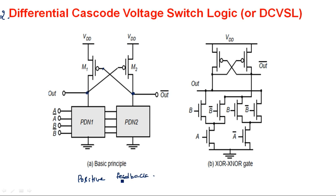The advantage of this cross-coupled connection is that it gives positive feedback. Unlike common source, common drain, or common collector amplifier configurations which yield negative feedback, this differential cascode voltage swing logic shows positive feedback. The inputs to pull down network one are in true form, while pull down network two receives complemented inputs.